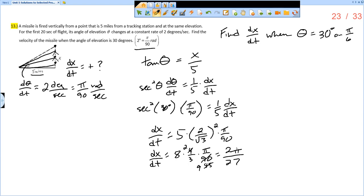Now, what is the unit of distance? Well, we had 5 miles. And so this is miles per second. Now, 2 pi over 27 miles per second.